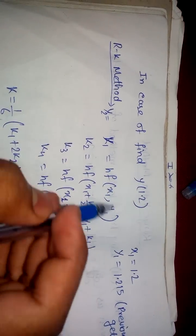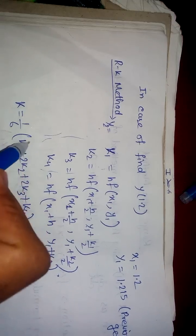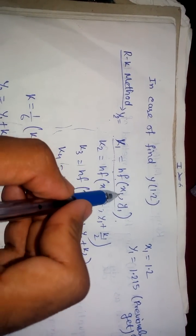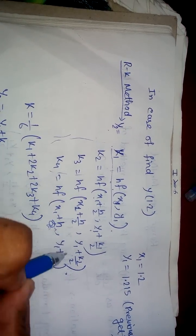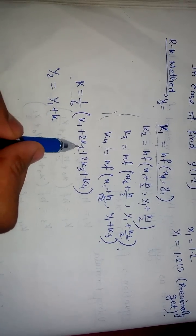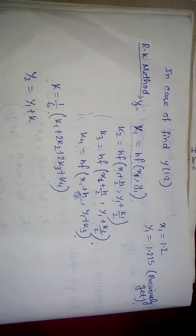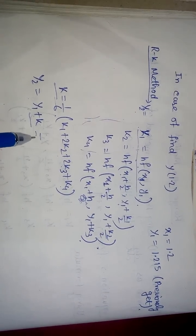If the problem asks us to find y(1.2), we have to run the RK method again for y2. We again find four parameters k1, k2, k3, k4, but the formula changes slightly: k1 equals h times f(x1, y1) — we replace x₀ and y₀ with x1 and y1. The rest remains the same structure. We compute K the same way using (1/6)(k1 + 2k2 + 2k3 + k4), and then y2 = y1 + K. Thank you friends, best of luck — please subscribe to my channel.